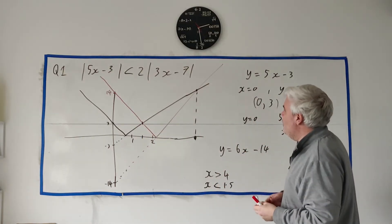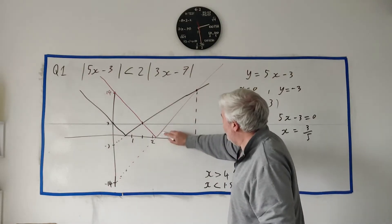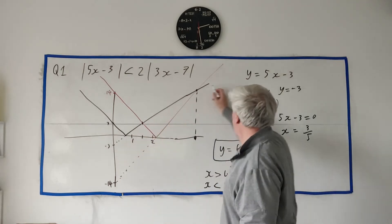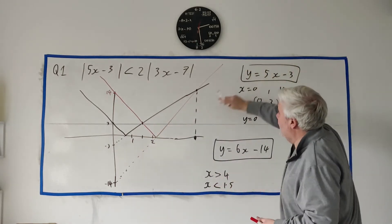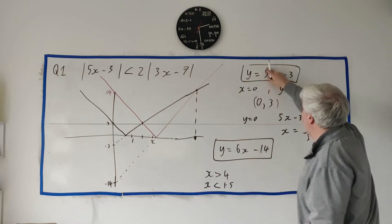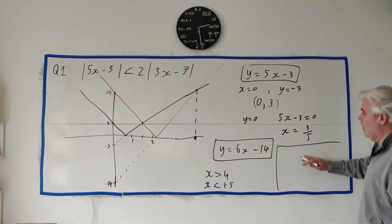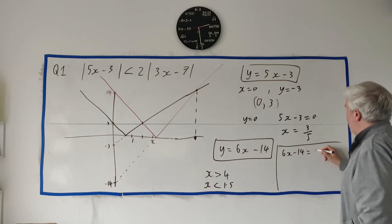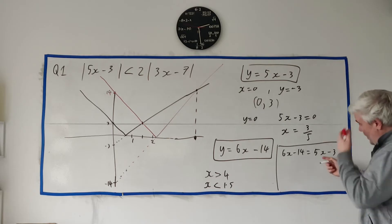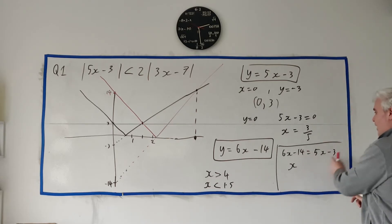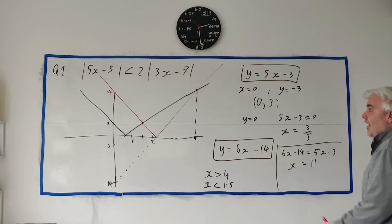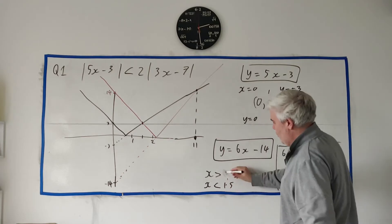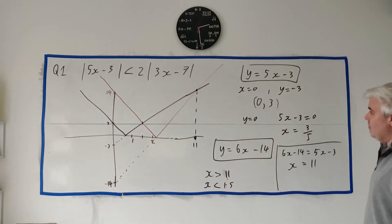To find the right intersection point, we match the two positive lines: 6x minus 14 equals 5x minus 3. Taking 5x over to the left and minus 14 to the right gives us x equals 11. So x greater than 11 is the answer for that region — 4 was a terrible guess from my drawing!